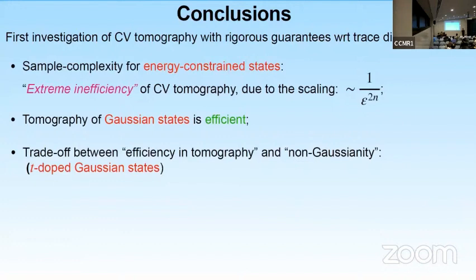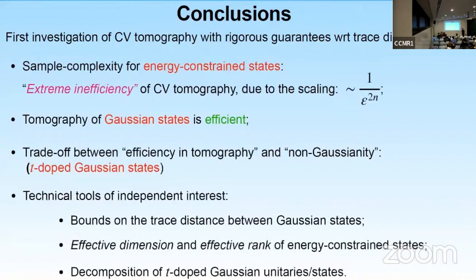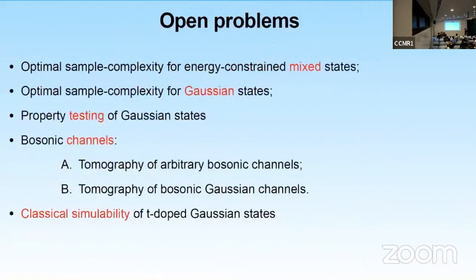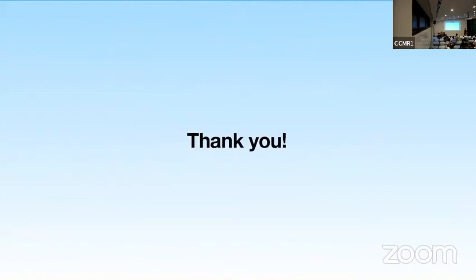In conclusion, in our work we provided the first investigation of tomography of continuous variable systems with rigorous performance guarantees with respect to the trace distance error. We found the sample complexity for energy-constrained states and showed the phenomenon of extreme inefficiency due to the very bad scaling with trace distance error. We showed a positive result — tomography of Gaussian states is efficient — and studied the trade-off between these two limits by deriving results on T-doped Gaussian states. We also introduced technical tools of independent interest, such as bounds on the trace distance between Gaussian states in terms of the norm distance of their moments. Thank you for your attention.